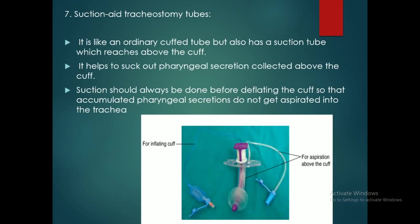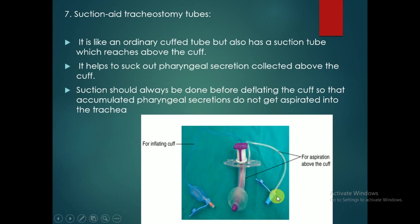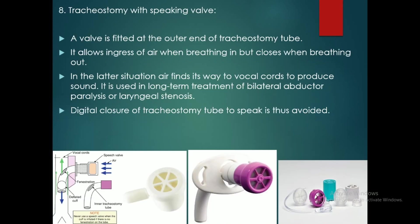Suction-aided tracheostomy tube: it is like an ordinary cuffed tracheostomy tube but also has a suction tube which reaches above the cuff. This is the suction tube. It helps to suck out pharyngeal secretions collected above the cuff. Suction should always be done before deflating the cuff so that accumulated pharyngeal secretions do not get aspirated into the trachea.